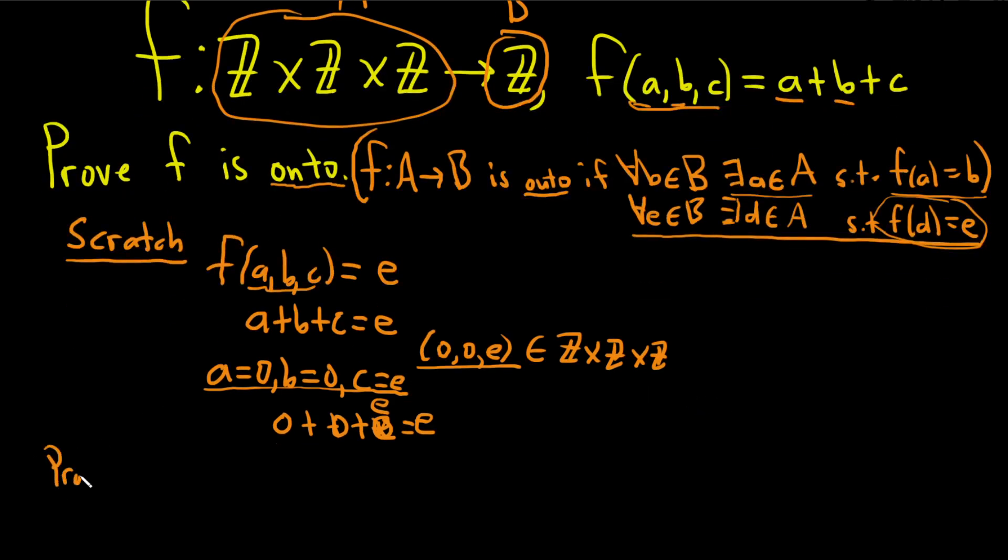So proof, it will be a little more clear maybe when we actually go through the writing of the proof. So we'll start by saying take an element, and I'm going to use E again in capital B. So take any E in capital B. What's capital B? That's Z, that's this set here, it's our co-domain.